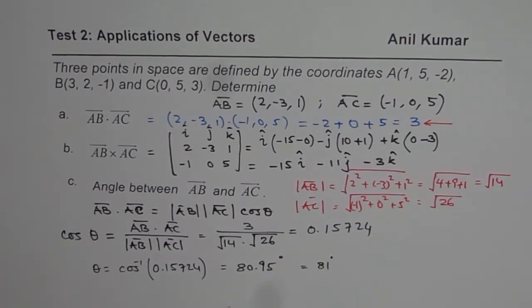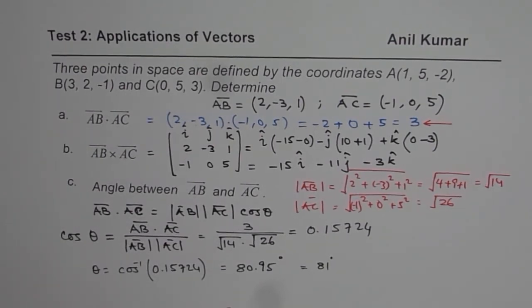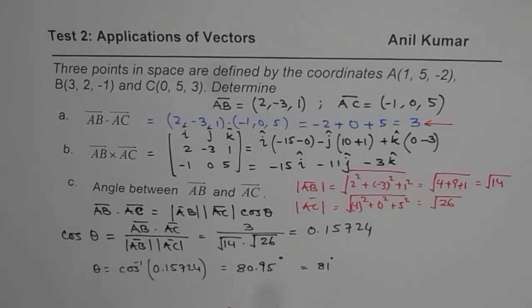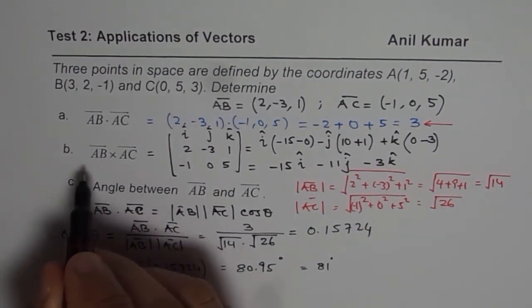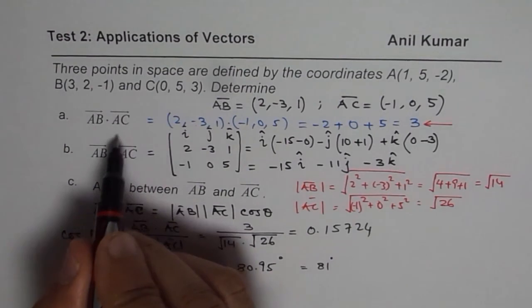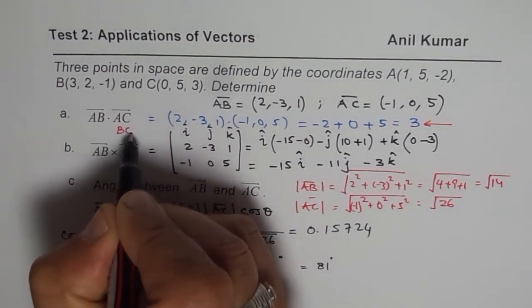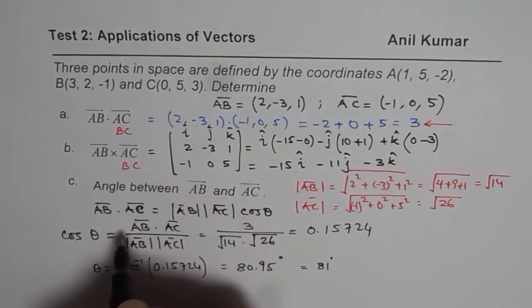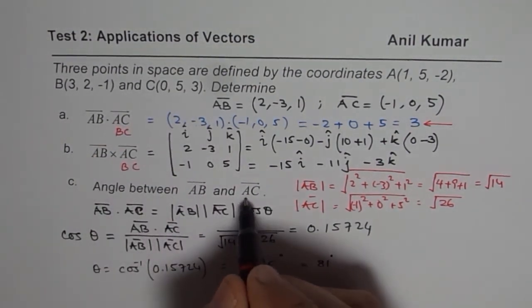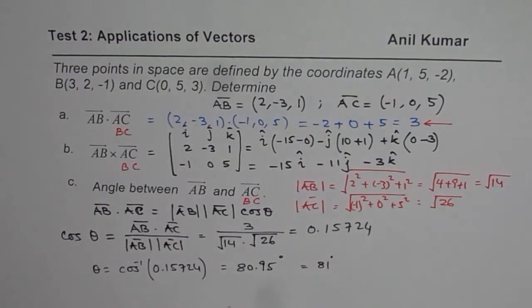So we get 81 degrees as the angle between the two, I hope the steps are absolutely clear. So as a practice, you can actually change the question a bit, so you can find, instead of dot product with AC, you can find it with BC. So change these values to BC, and then find the angle between AB and BC. So let that be your practice question. I hope that helps. Thank you, and all the best.